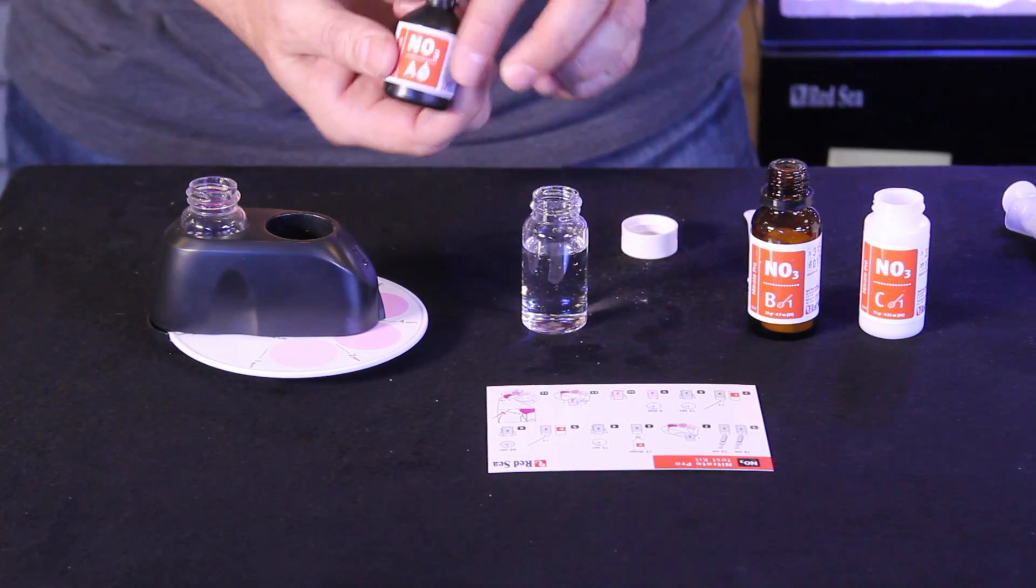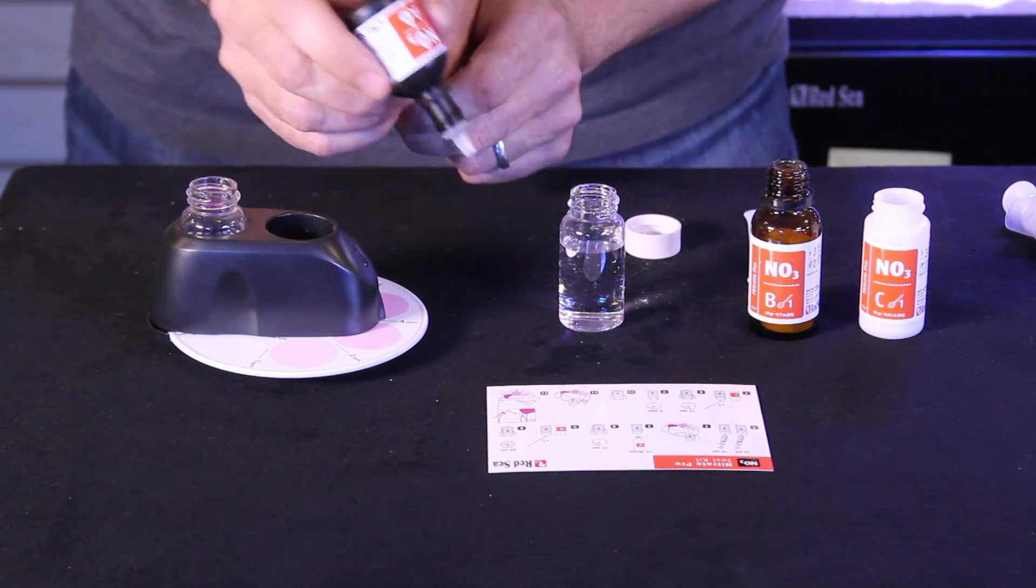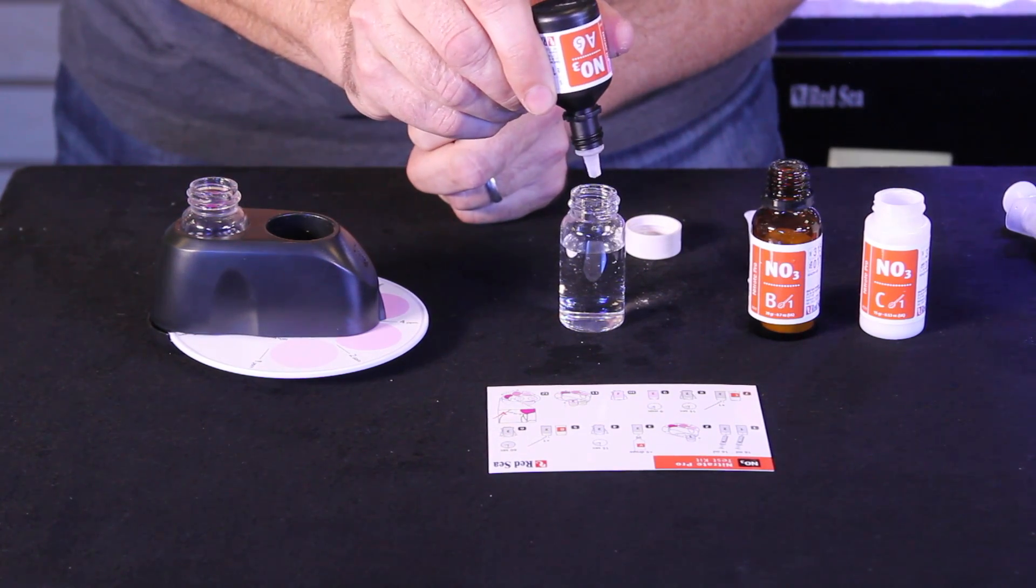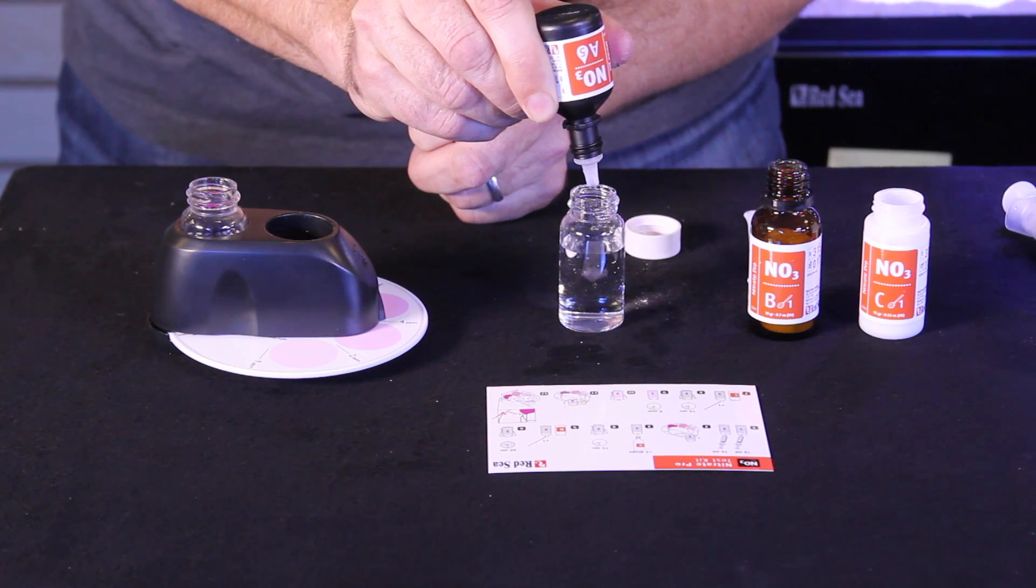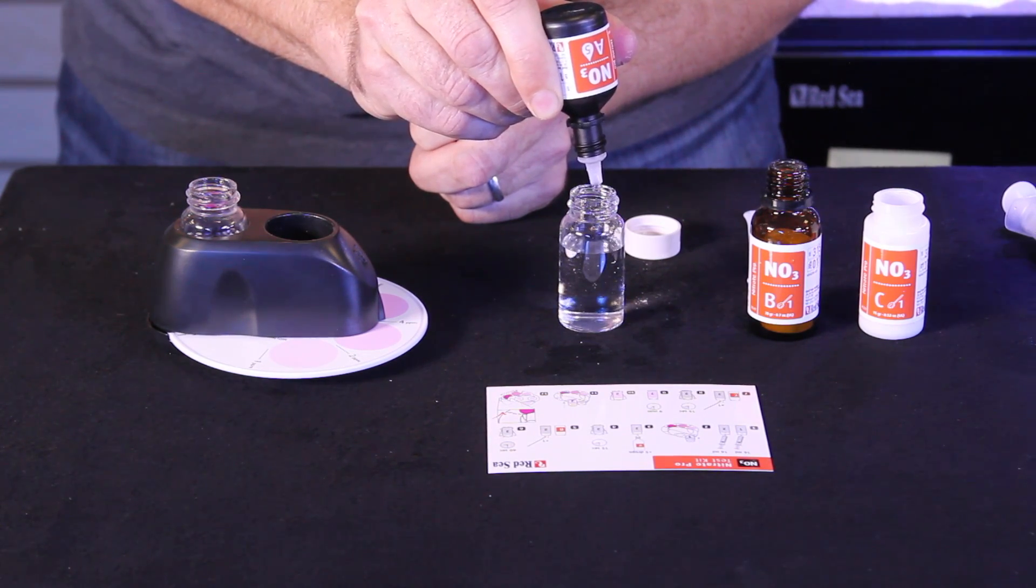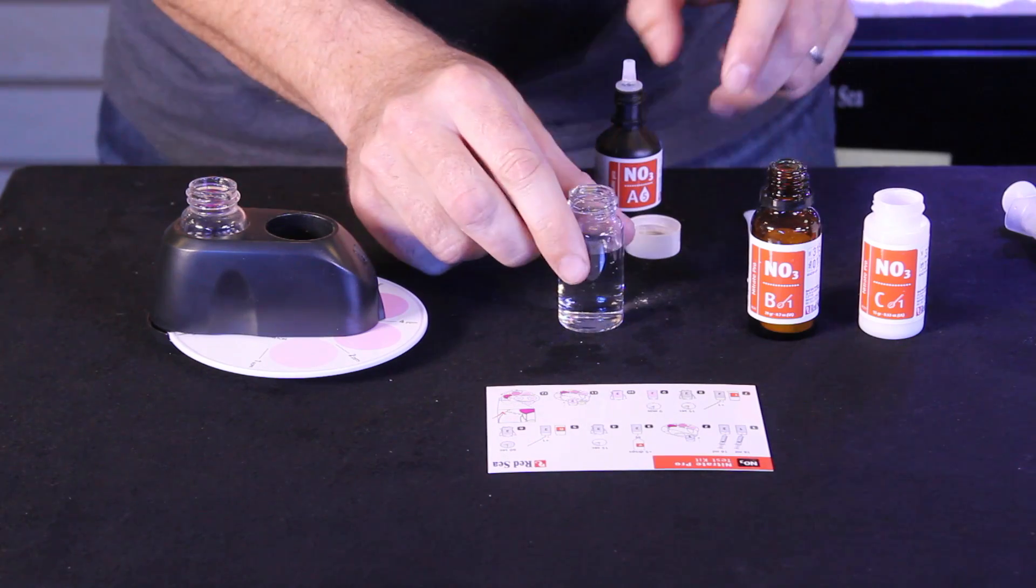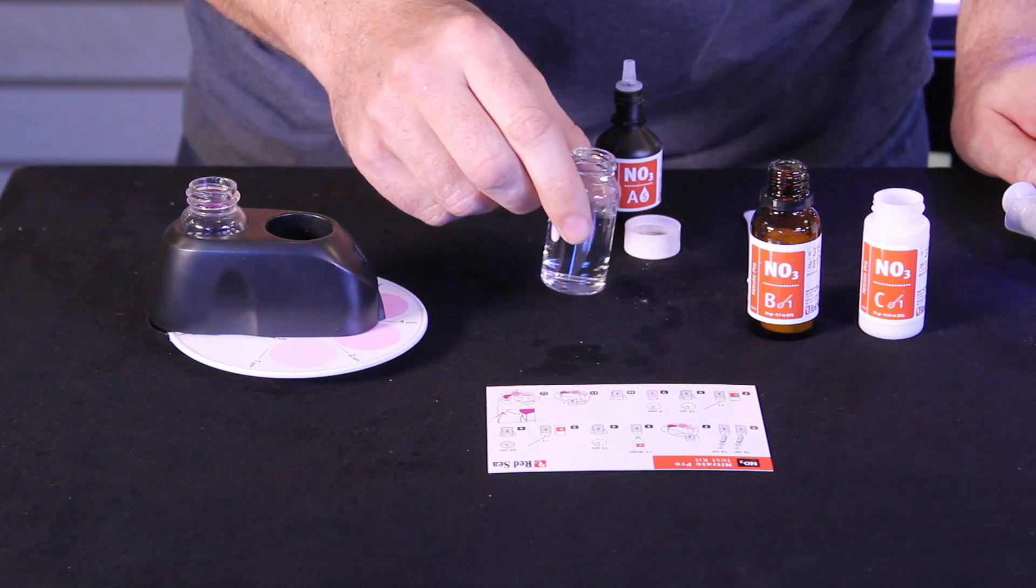Now the first step is to add again five drops of reagent A to the test vial. Two, three, four, five. And then we need to swirl for 15 seconds.